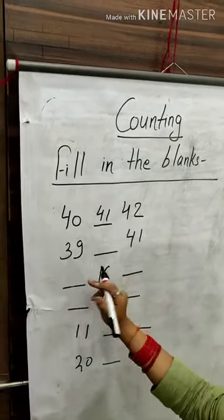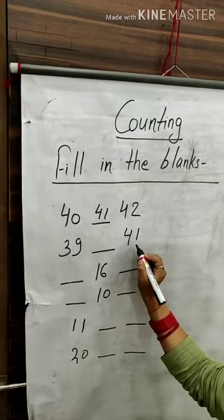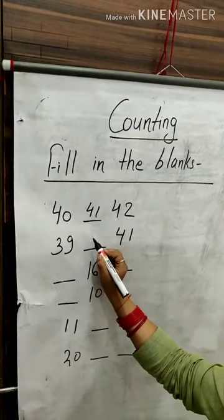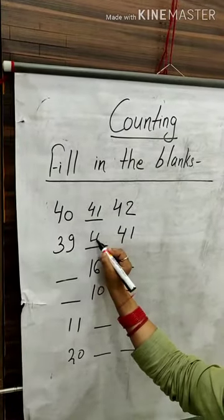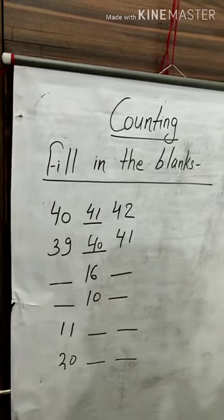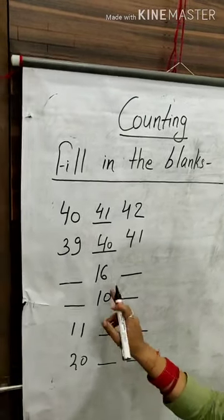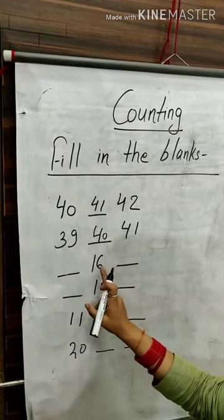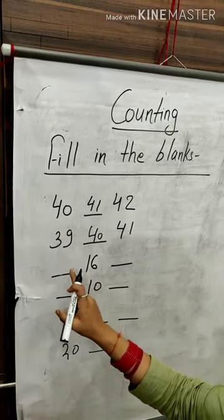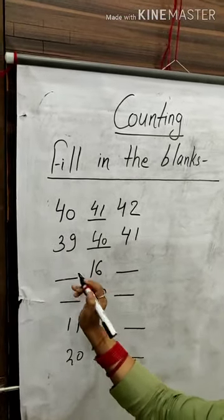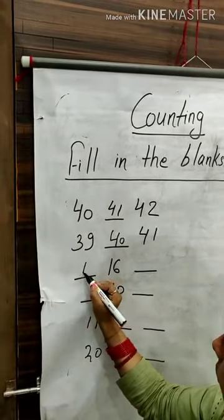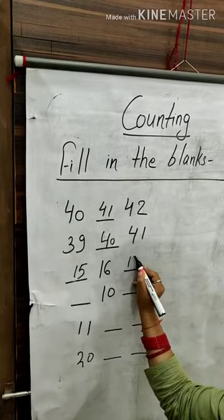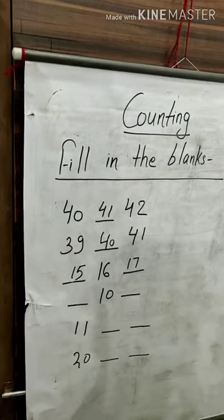Thirty-nine, forty and forty-one. Sixteen. Eleven, twelve, thirteen, fourteen and fifteen. So, fifteen, sixteen and seventeen.